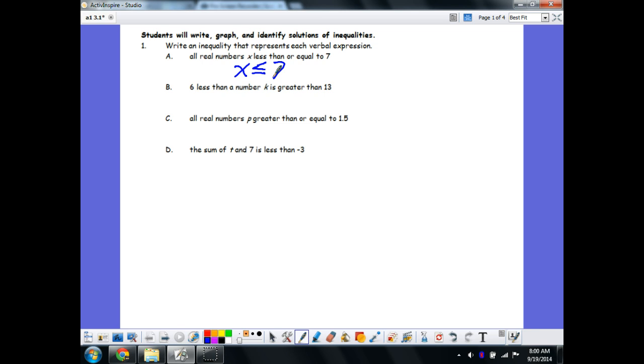Part B is a little bit trickier because notice how it says 6 less than a number k, not 6 is less than a number k. That's a key that there should be some subtraction going on there. And remember with 'less than,' like we talked about last unit, we need to reverse these. If you think about this: